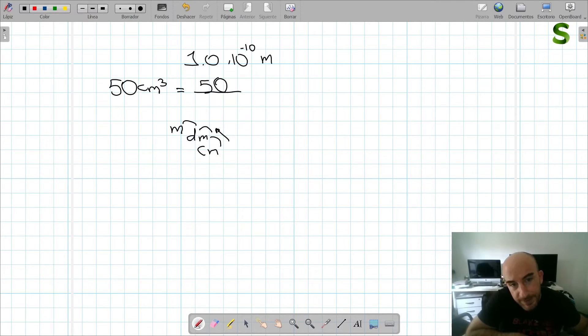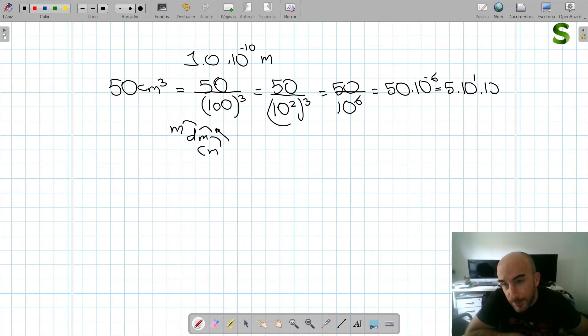So it would be 50 divided by, it's 2 steps would be 100 if it were centimeters, but it's cubed, so we have to cube them. So that's 50 divided by 10 to the power of 2 to the power of 3. I'm going to do this very slowly. That's 10 to the power of 6, that's 50 times 10 to the power of minus 6, which is 5 times 10 to the power of 1 times 10 to the power of minus 6, and that's 5 times 10 to the power of minus 5 meters cubed. So now we have that in meters cubed.